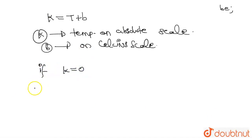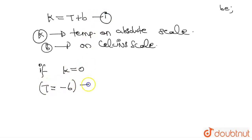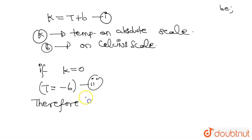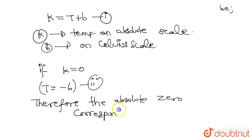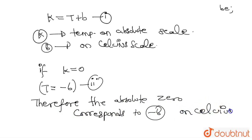So, T will be equals to minus B. Let's call this equation one and equation two. Therefore, the absolute zero corresponds to minus B on the Celsius scale.